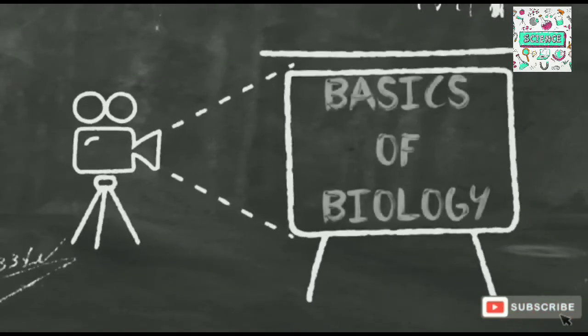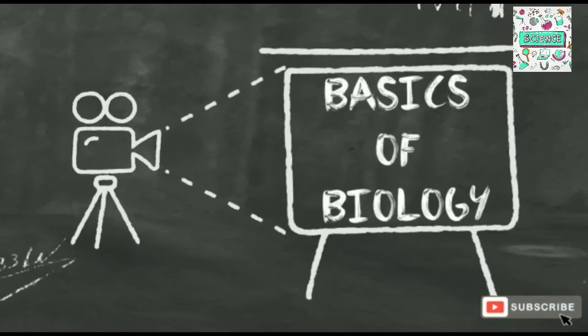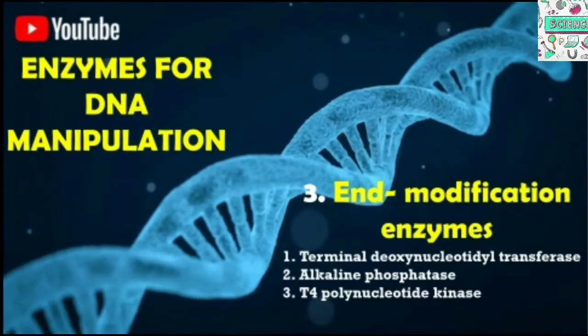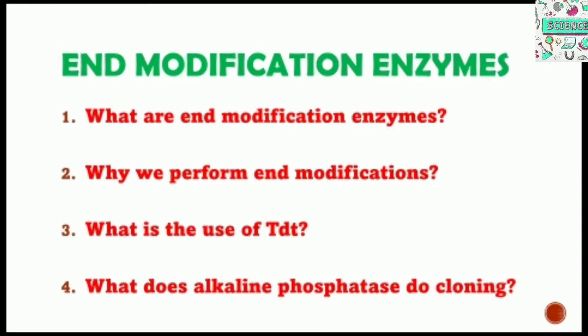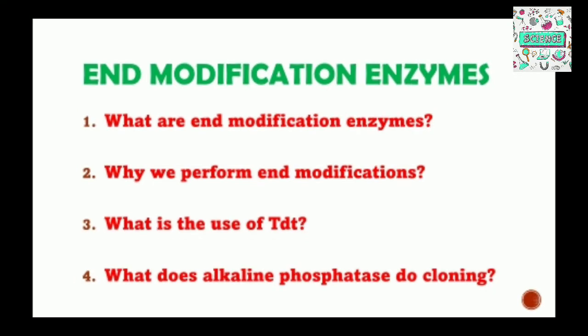Hello and welcome back at Basics of Biology. In this video series we are discussing enzymes used in recombinant DNA technology. In this video we will discuss end modification enzymes, which are terminal deoxynucleotidyl transferase, alkaline phosphatase, and T4 polynucleotide kinase. Some guiding questions: what are end modification enzymes, why do we perform end modification, what is the use of terminal deoxynucleotidyl transferase, and what is the role of alkaline phosphatase in DNA cloning?